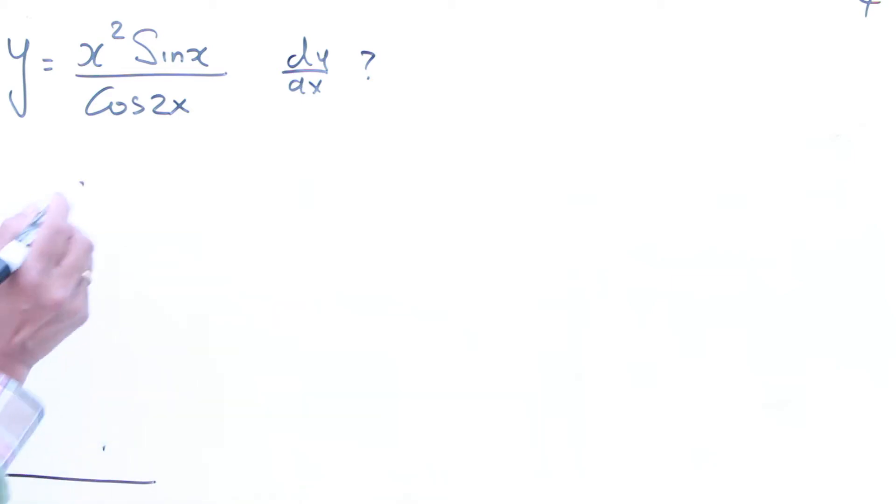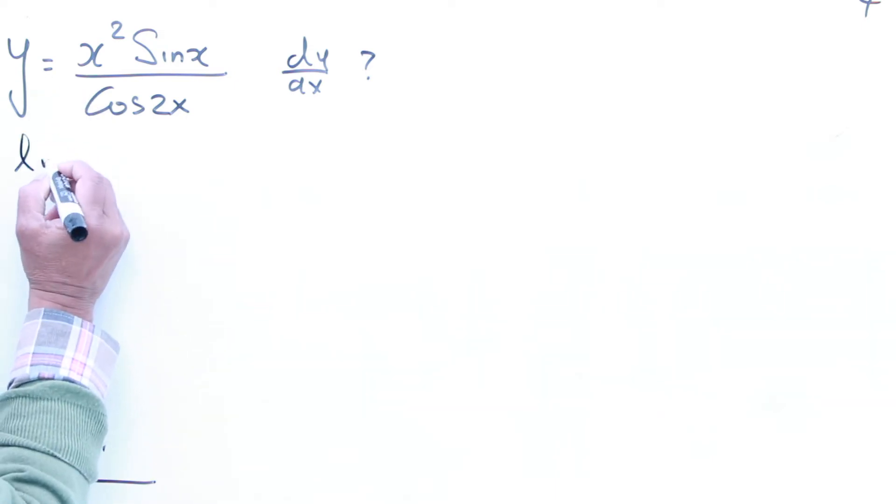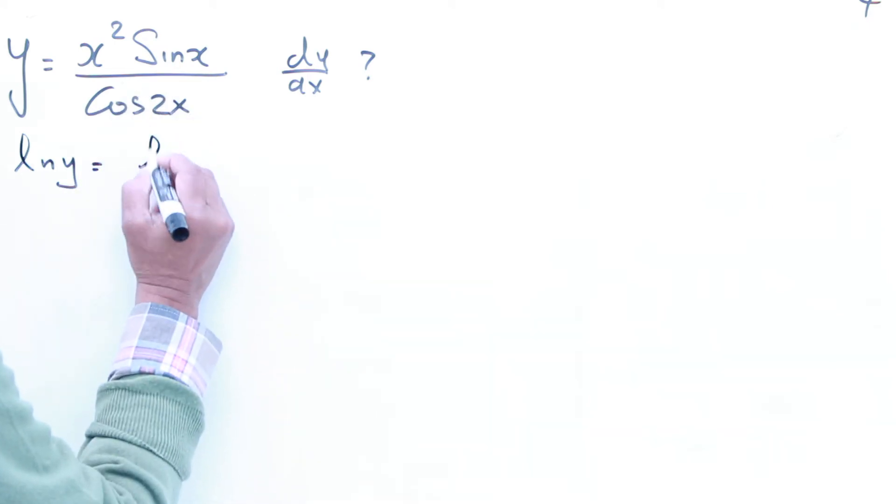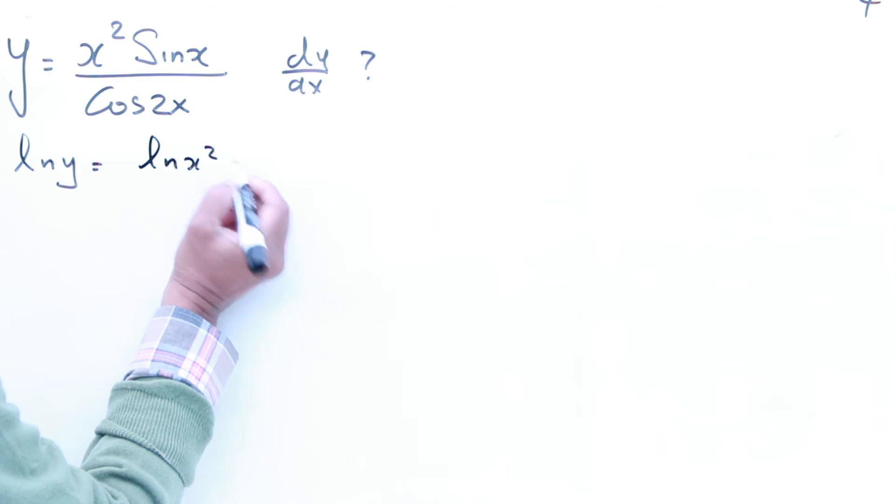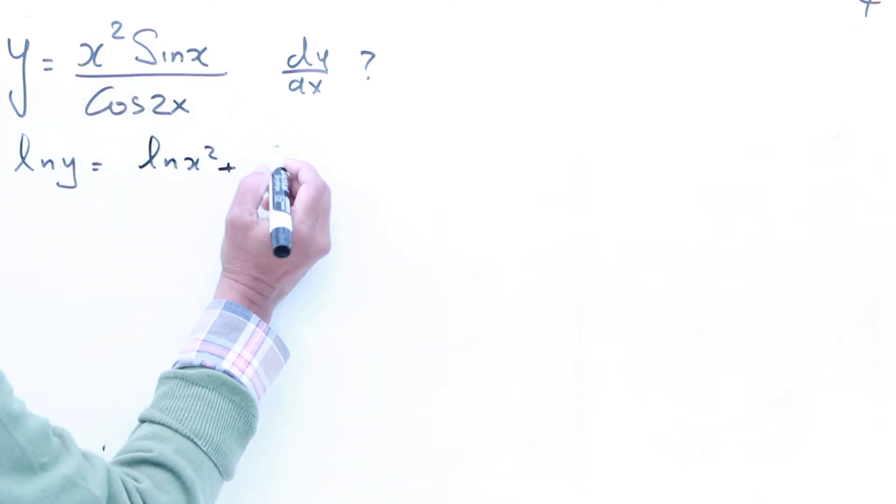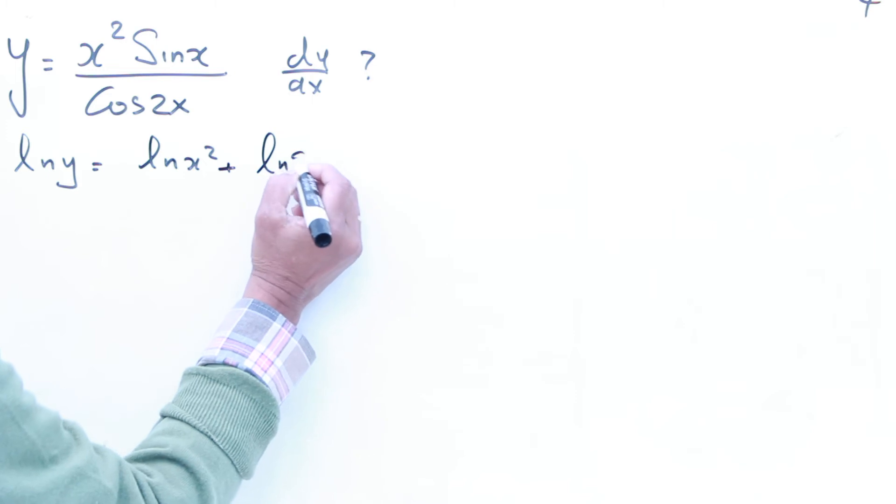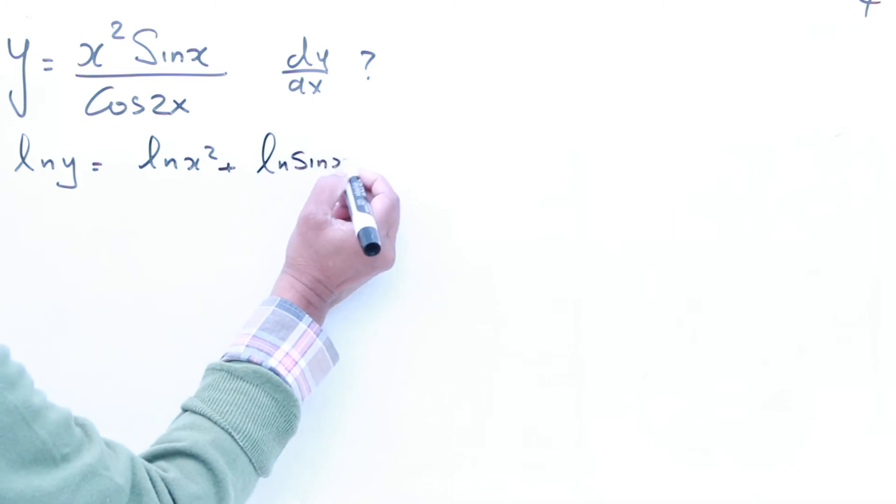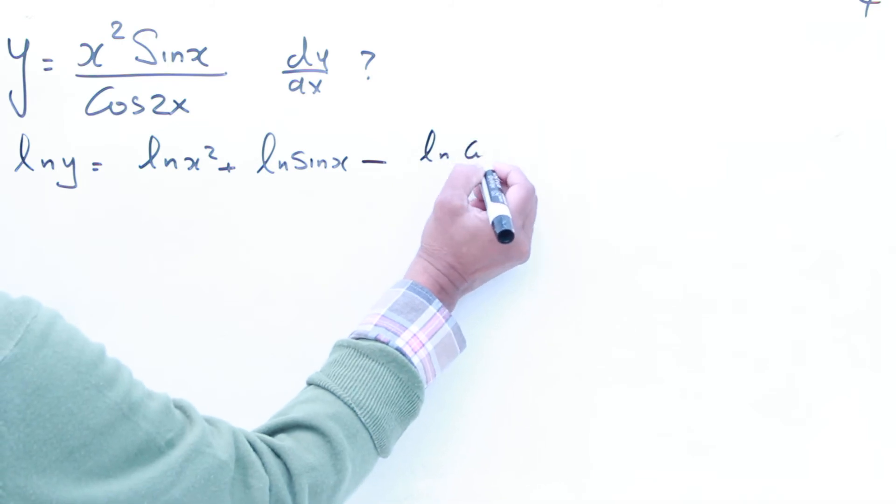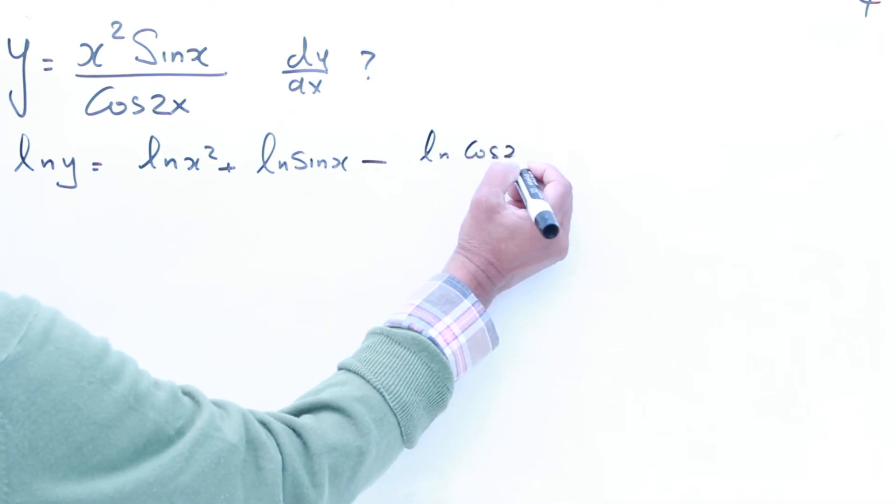Instead of doing that, I am going to take the natural log both sides. So I am going to say ln y equal to ln x squared plus, because it is a multiple, so it will be plus, ln sin x. Then it is divisive, so minus ln cos 2x.